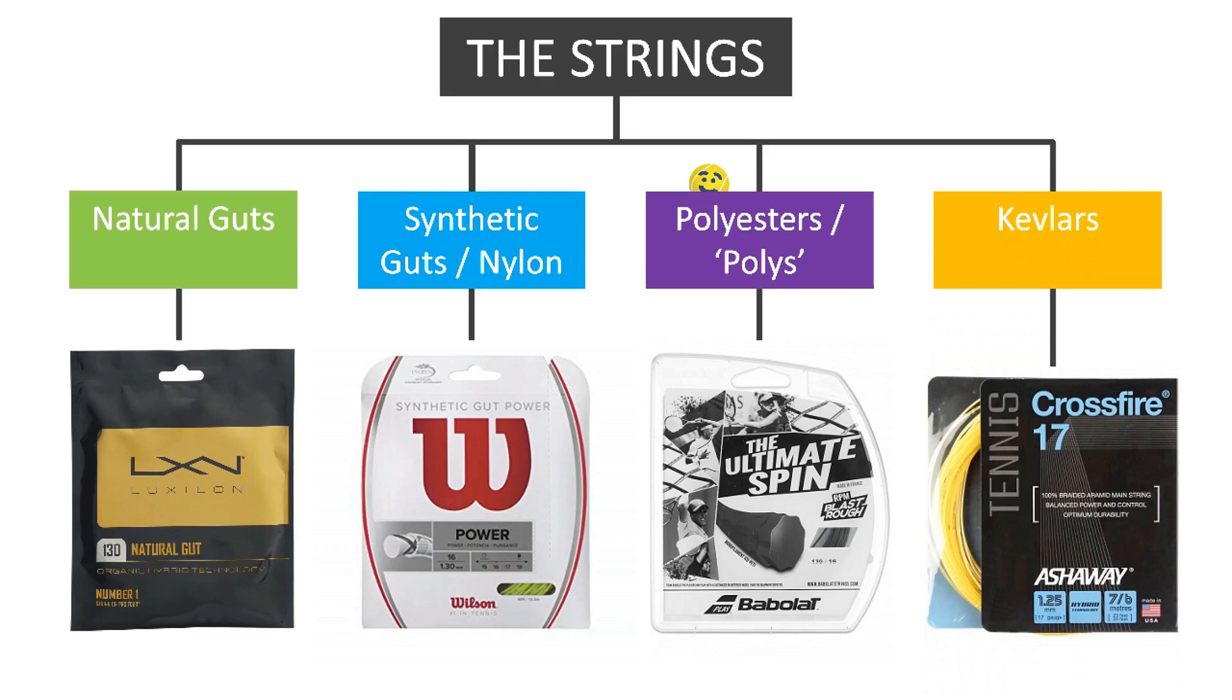Each of these have differing properties when it comes to playing the game. For example, polyesters provide far less feel and power than natural gut. However, they are much more durable, suiting more powerful players. Let's take a look at some of the materials used.